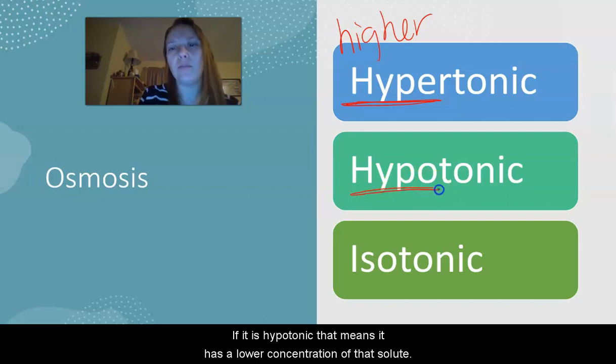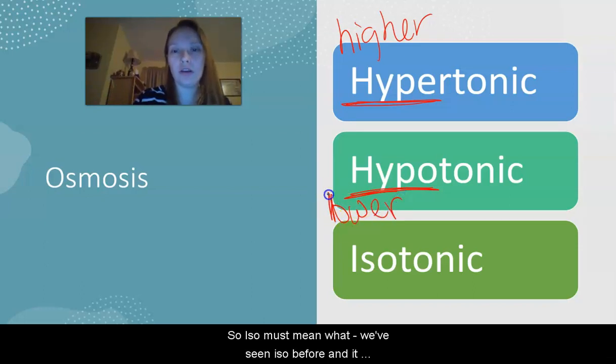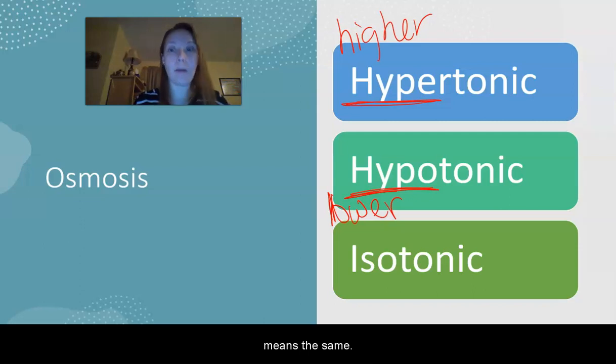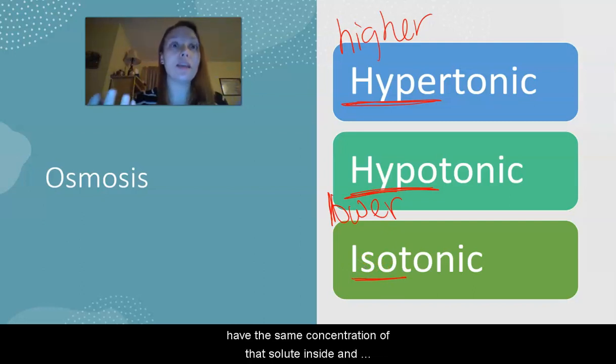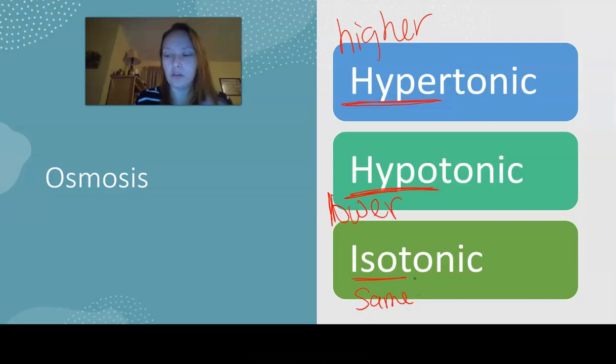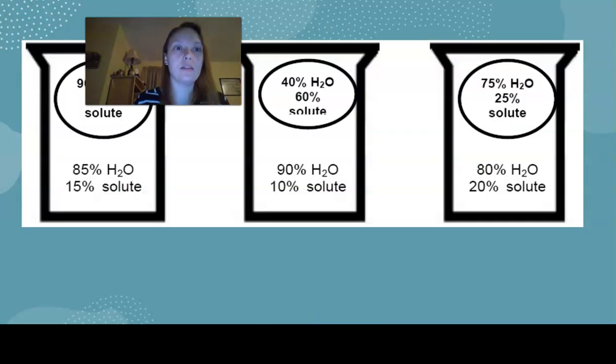If it is hypotonic, that means it has a lower concentration of that solute. So iso must mean what? We've seen iso before, and it means the same. That's what it means here too. An isotonic solution means you have the same concentration of that solute inside and outside of the cell. So let's take a look at how we can apply this concept.